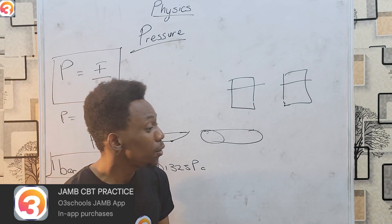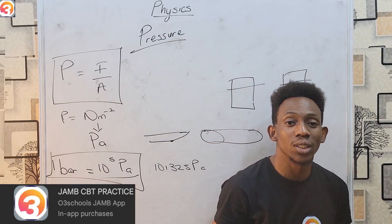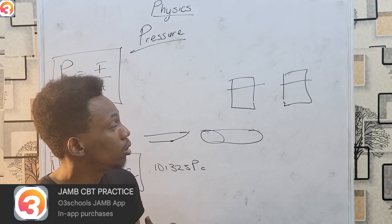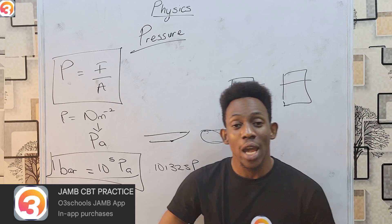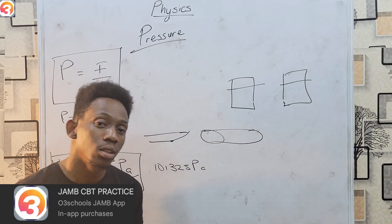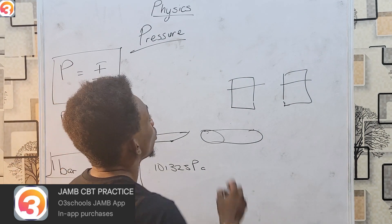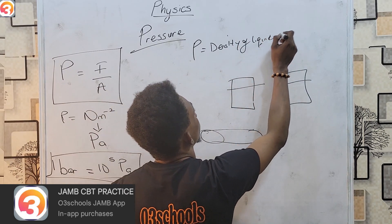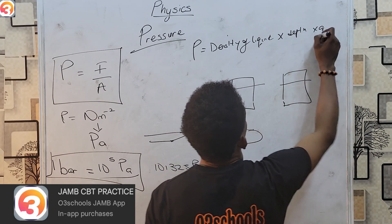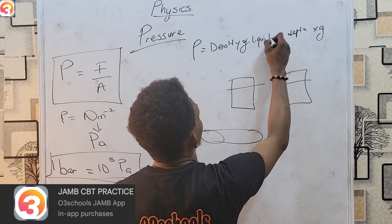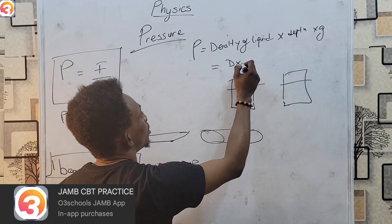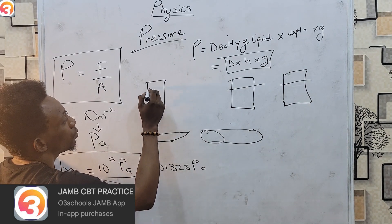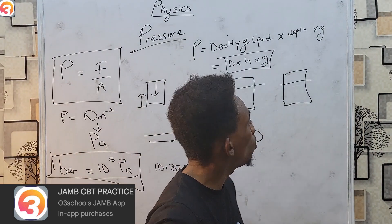Last but not least, if you are at the same depth in two different liquids, the liquid with a higher density automatically has a higher pressure. So pressure depends on depth — the deeper you are, the higher the pressure — and it also depends on density. Pressure equals the density of the liquid times depth h times g, summarized as P = ρhg, where we measure in terms of depth.